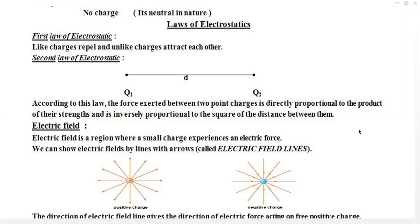Unlike charges means positive with negative — different charges. Unlike charges always attract. If we take one positive charge and move it towards a negative charge, attraction will occur. So between two same charges, repulsion will occur, and between two different charges, attraction will occur.